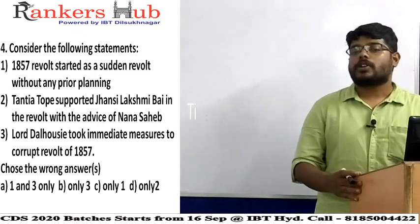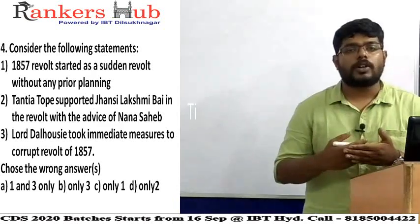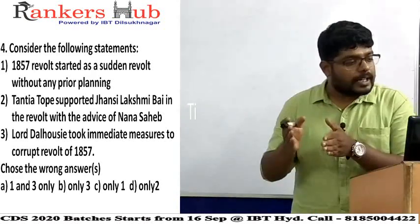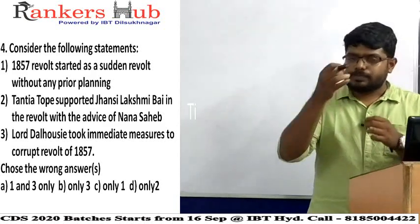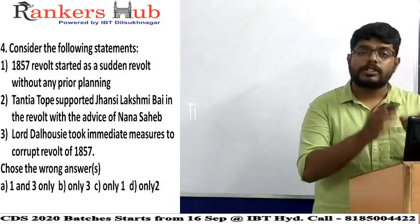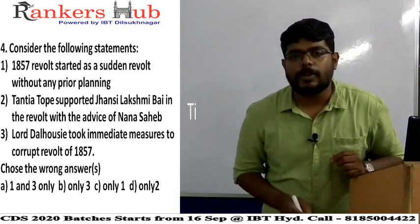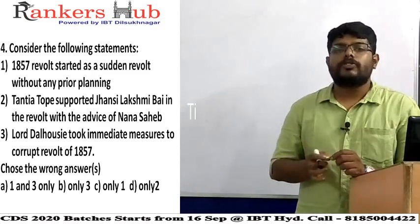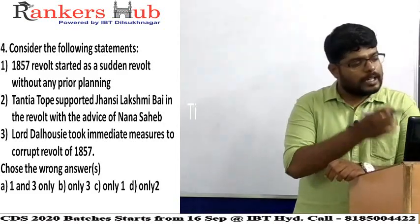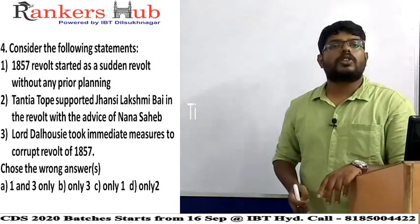Statement one is wrong because the 1857 revolt was not a sudden revolt — it had a very long burning time and a complete prior plan, as Indian people planned it on May 10, 1857. Statement two is correct: Tantia Tope supported Jhansi Lakshmi Bai, and Tantia Tope was a person of Nana Sahib, so Nana Sahib advised Tantia Tope to support Jhansi Lakshmi Bai.